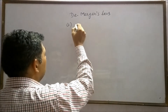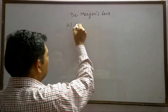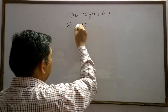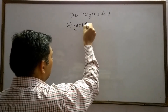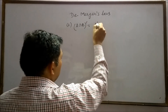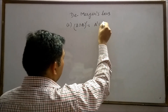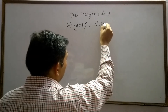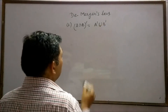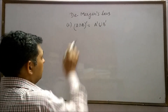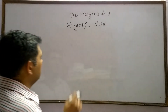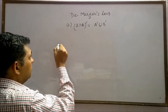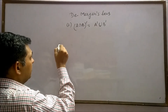Second, De Morgan's Law states that A intersection B whole complement is equal to A complement union B complement. Let's try to draw the Venn Diagram for the whole complement of A intersection B.